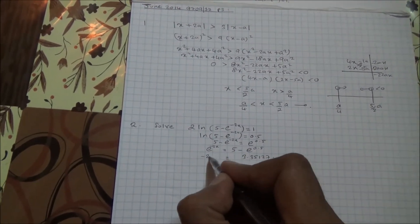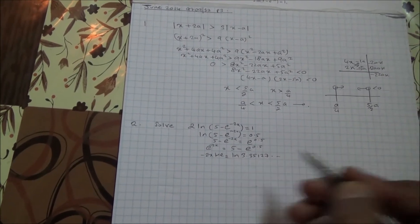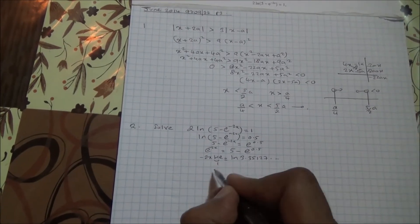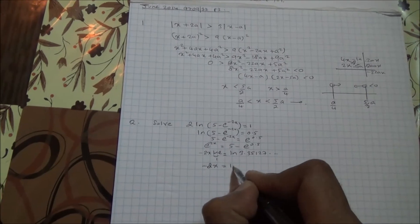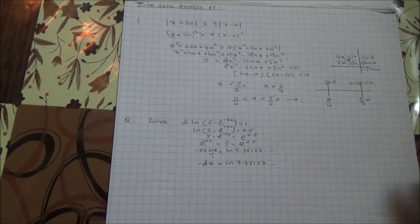Now, the 2 can come down, 2x ln e, and that's going to become ln this. So, and therefore, ln e is 1, so we have then minus 2x is equal to ln 3.35127, and so on.